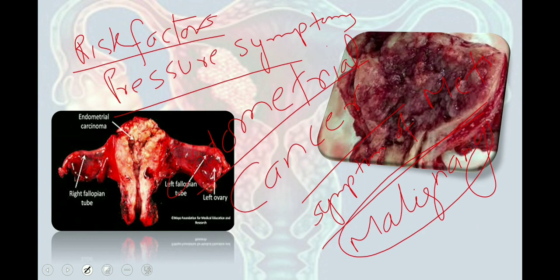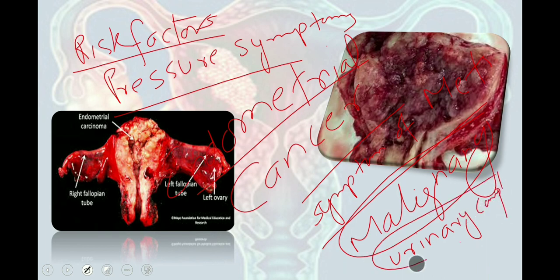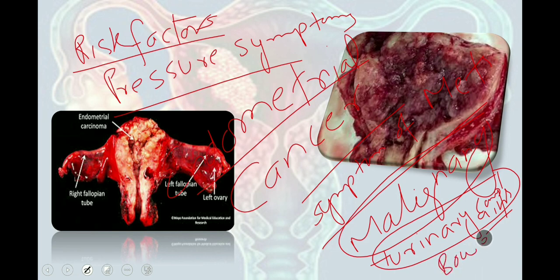Urinary complaints are also present in patients with pelvic organ malignancy, and we have to ask about urinary retention, frequency or urgency, urinary difficulty, and hematuria. Regarding bowel complaints, we have to ask about bloating, diarrhea, tenesmus, and hematochezia.